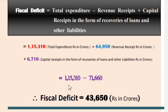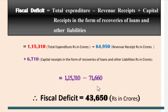Therefore: 1,15,310 Crores − 71,660 Crores = 43,650 Crores. Hence, Fiscal Deficit = Rs. 43,650 Crores. This is our result — this is the calculation of fiscal deficit.